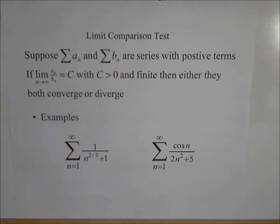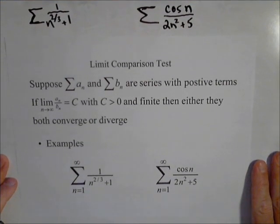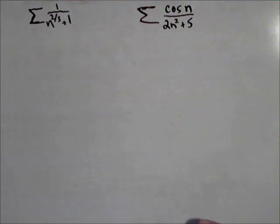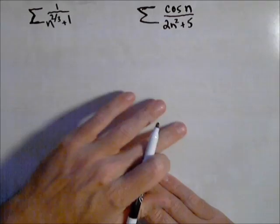So I want to talk about how this plays out with a couple of examples. Not that the limit comparison is the only way to do these, but I just want to show you how this is set up.